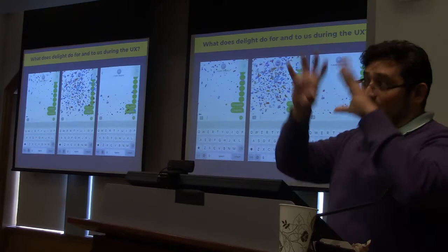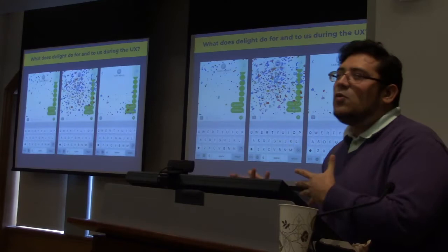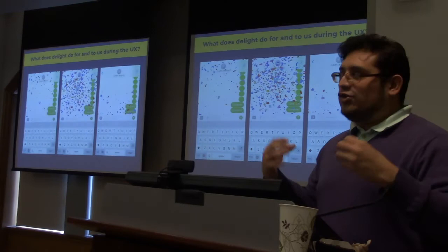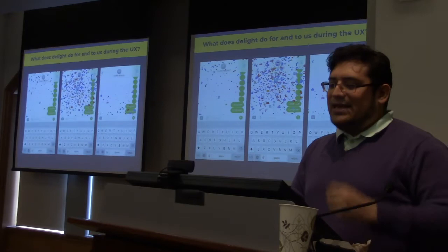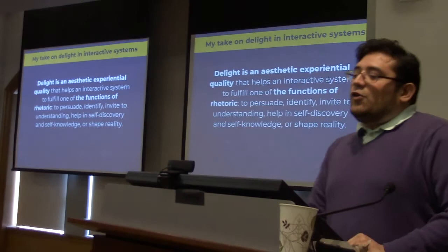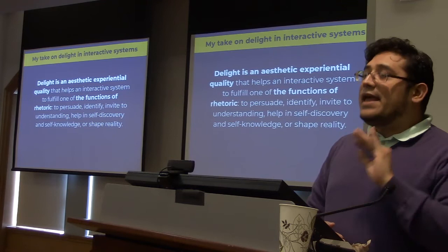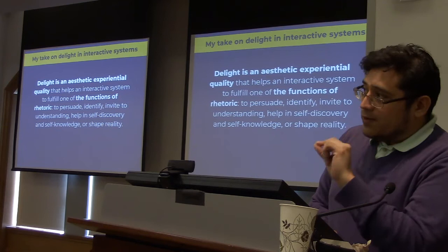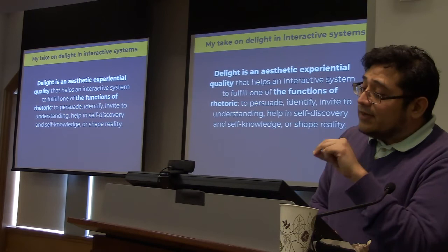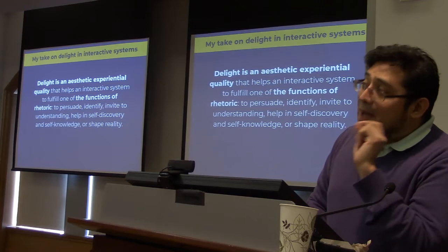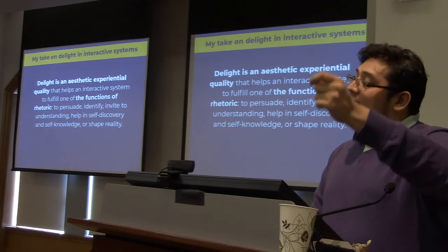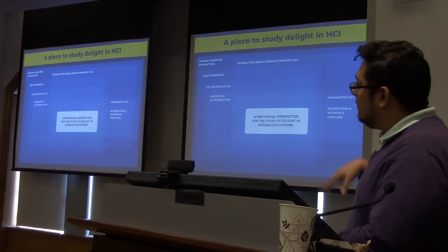For example, when you type 'congrats' and see an explosion of confetti, it's somehow telling you that congratulating someone should be festive, and the system is saying 'I'm with you, let's celebrate this.' So my take on delight in interactive systems is this: I consider delight as an aesthetic experiential quality that helps an interactive system fulfill one of the functions of rhetoric — to persuade, identify, invite to understanding, help self-discovery and self-knowledge, or shape reality. We aim at creating delight because we're going to fulfill one of these functions.